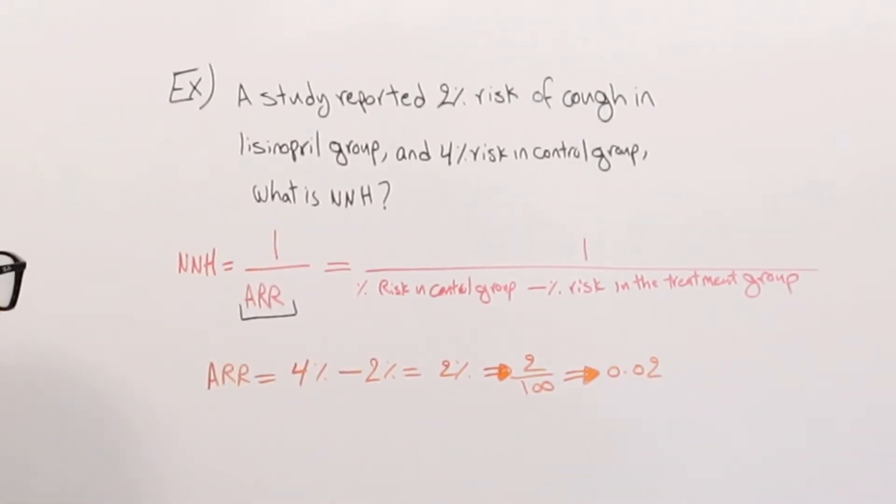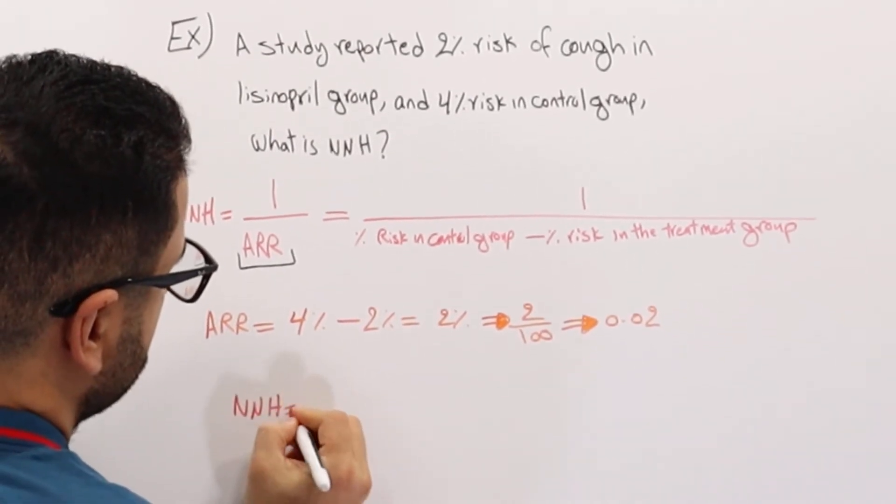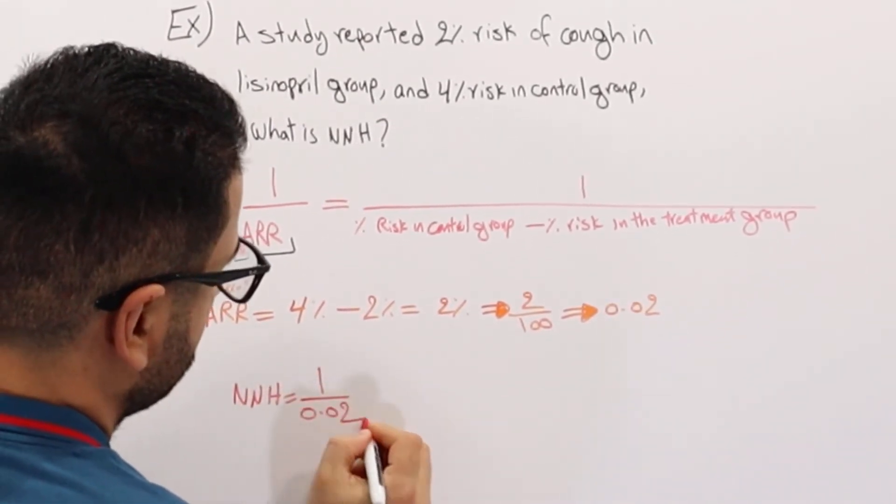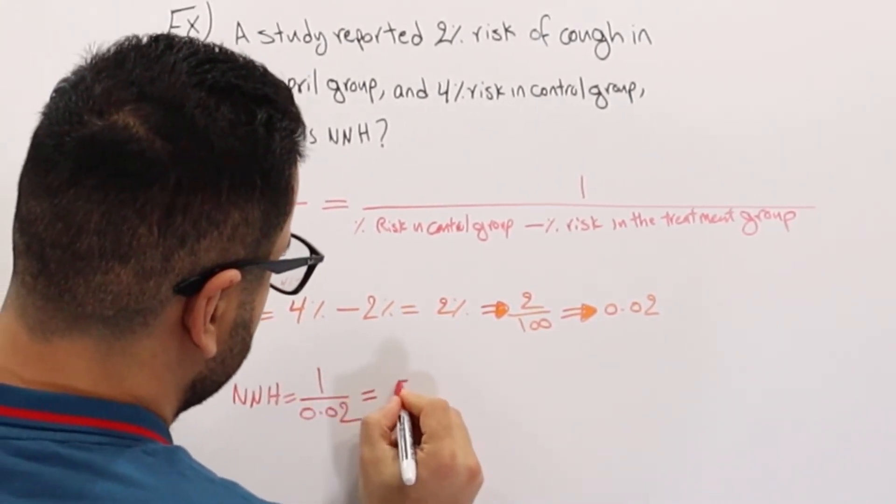Now I can use this and plug it over here. So number needed to harm is 1 over 0.02, and dividing 1 over 0.02 is going to be 50.